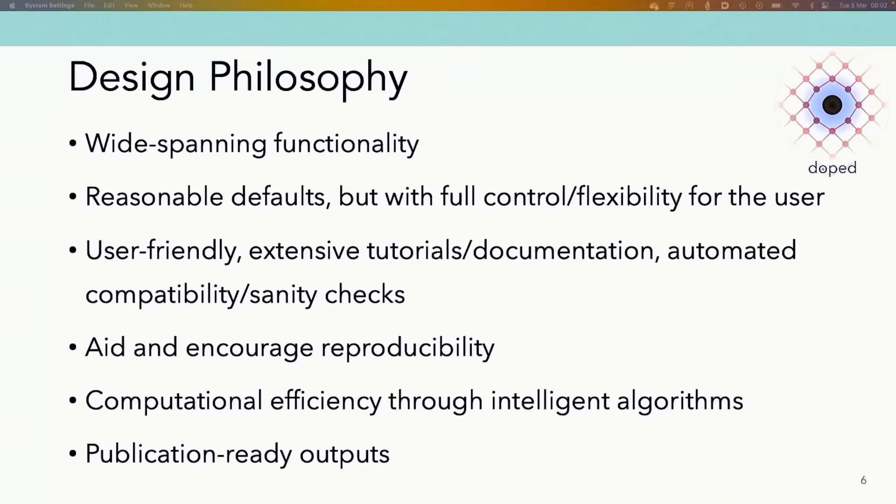So just worth briefly mentioning is the design philosophy of DOPED, which is essentially been to try and incorporate a wide range of functionality, a lot of which has been driven by the wide range of applications that our users have been focused on. So from narrow gap semiconductors for solar cells and thermoelectrics up to wide gap insulators for power electronics, batteries, as well as in between phosphors, radiation detectors, and transparent conductors. We've built it to have a set of reasonable defaults to work for the vast majority of cases out of the box, but also with full control and flexibility for the user to fine-tune to their specific case. We've tried to make it as user-friendly as possible with extensive tutorials and documentation, automated compatibility and sanity checks. We want to aid and encourage reproducibility, as well as trying to achieve a certain level of computational efficiency through some intelligent algorithms and publication-ready outputs.